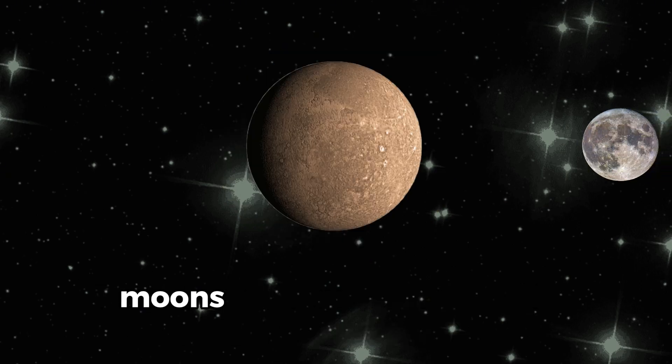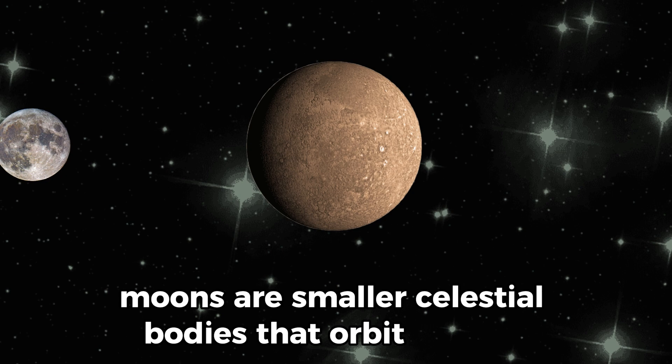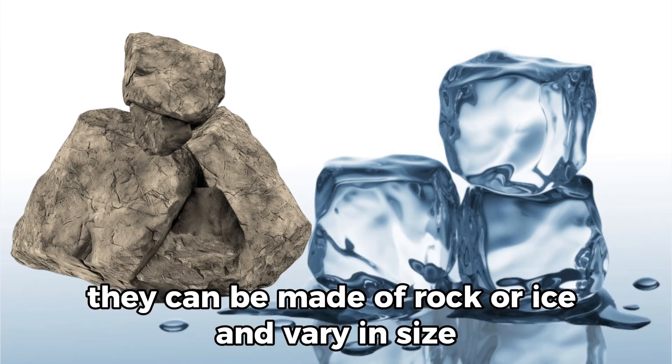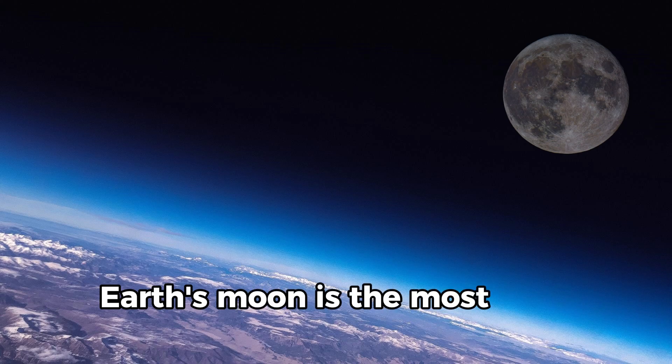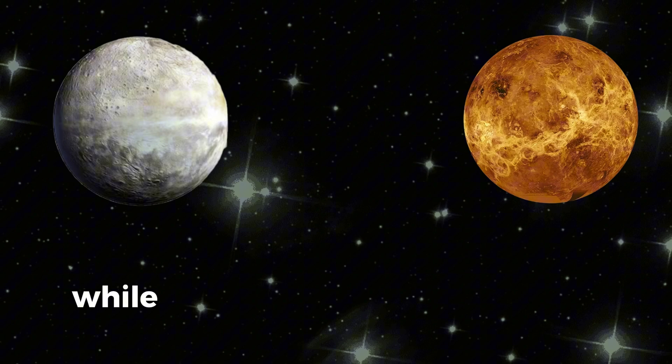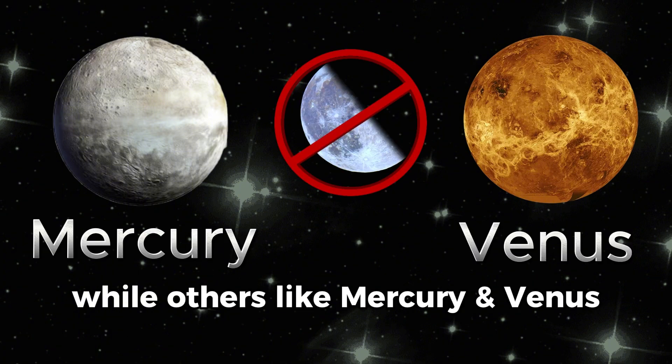Moons are smaller celestial bodies that orbit planets. They can be made of rock or ice and vary in size. Earth's moon is the most well-known example. Some planets like Jupiter have many moons, while others, like Mercury and Venus, have none.